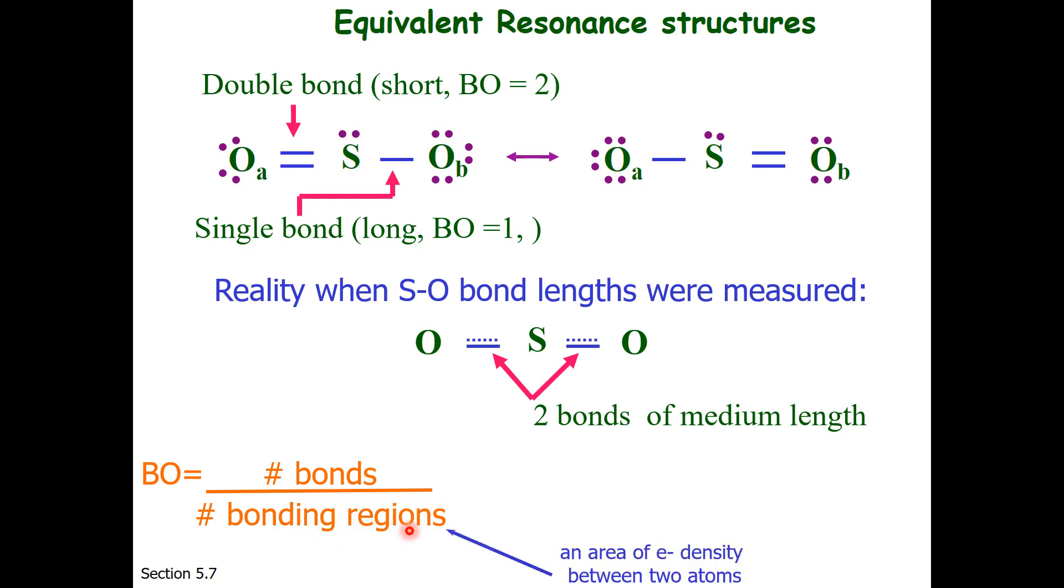Bonding regions, you remember, are an area of electron density between two atoms. So if I look at SO2, there are one, two bonding regions, but yet there are three bonds in that region. So the bond order of a sulfur-oxygen bond in SO2 is 1.5.